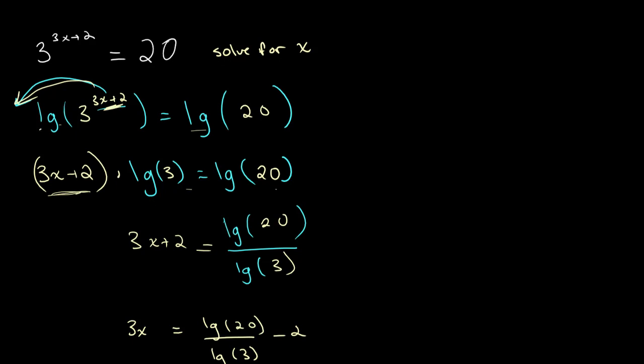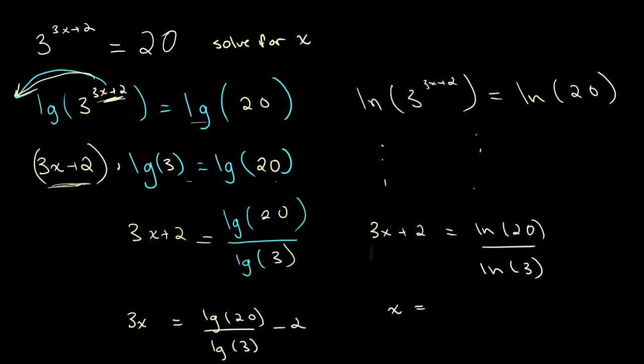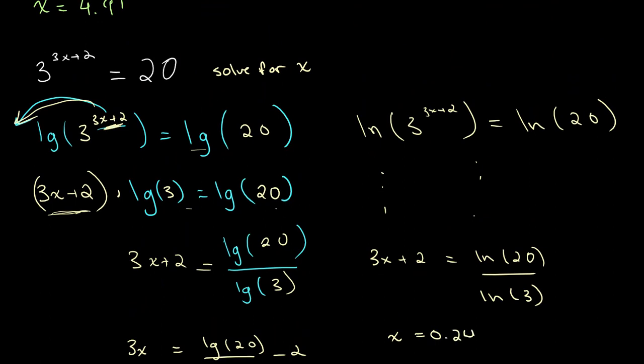Now it's important to note over here that lg or choice to take lg was just an arbitrary choice. We choose lg because it's one of the most standard versions of logarithms. We could have just as easily chosen ln. So in this case we would have gotten ln of 3 to the power of 3x plus 2 is equal to ln of 20. And we would have solved it the same way, eventually getting 3x plus 2 is equal to ln of 20 over ln of 3. And we would have ended up getting x is equal to 0.24 once again.